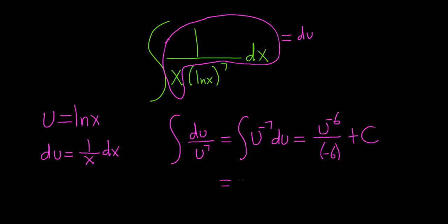Let's pull out that negative 6 and write it as negative 1 sixth times, and bring this down. So 1 over u to the 6th plus c.